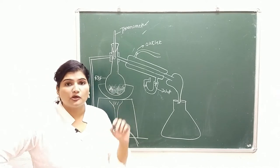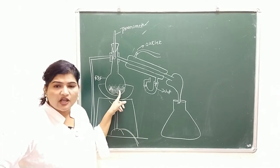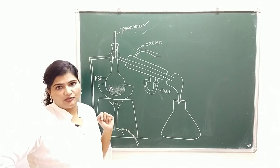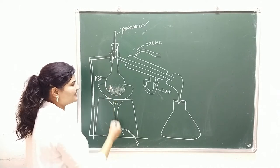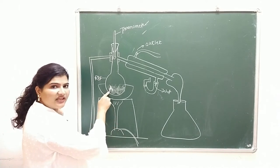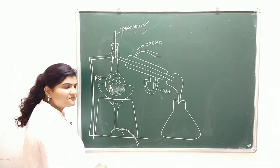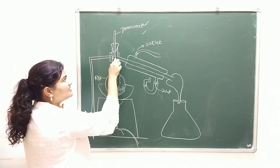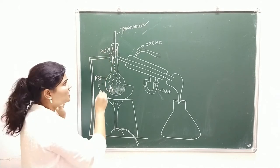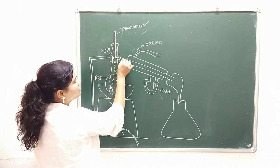We use distillation to separate a volatile sample from non-volatile impurities, or to separate liquid components if there is a sufficient difference in their boiling points. For example, if our analyte A is volatile and the rest of the mixture is non-volatile, when we heat it to the boiling point of A, it will vaporize. These vapors will rise and the thermometer will detect the temperature. If it equals the boiling point of A, the vapors will travel down into the side arm.